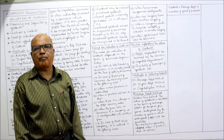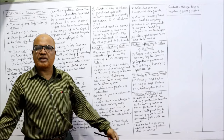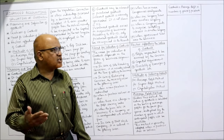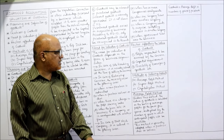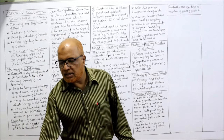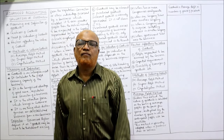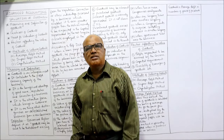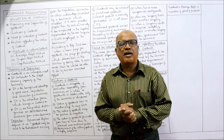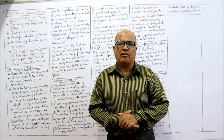This method is generally adopted when a partner dies or retires in a partnership business. The formula is: Goodwill = Average Profit × Number of Years of Purchase. The next method — super profit method — is very important, and I'll explain that in the next video.